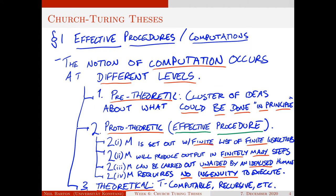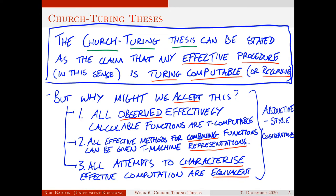I'm still talking about what an idealized human could do, so it's not fully formal yet. On the other end we have the theoretical notions of computation we've discussed — things like Turing-computable, recursive, abacus-computable, and so on. This is important when we're thinking broadly philosophically about the notion of computation — it occurs on these different levels and is a concept that has developed throughout time. Now that we've been more precise about effective procedures, we can state the Church-Turing thesis as the claim that any effective procedure in that sense is Turing-computable — that was Turing's part — or recursive, which was Church's part.